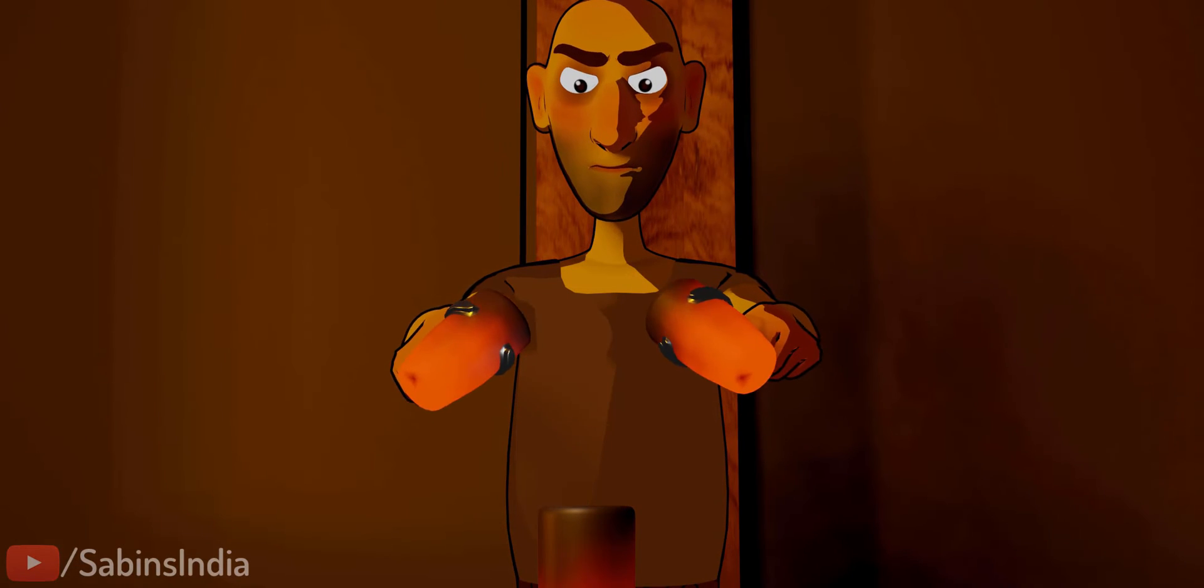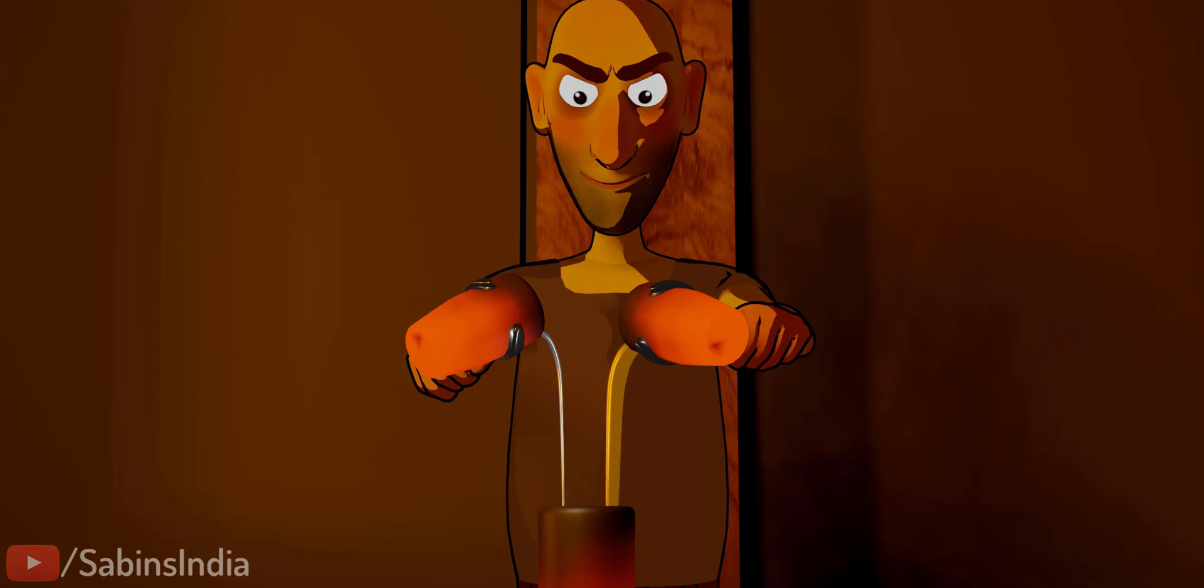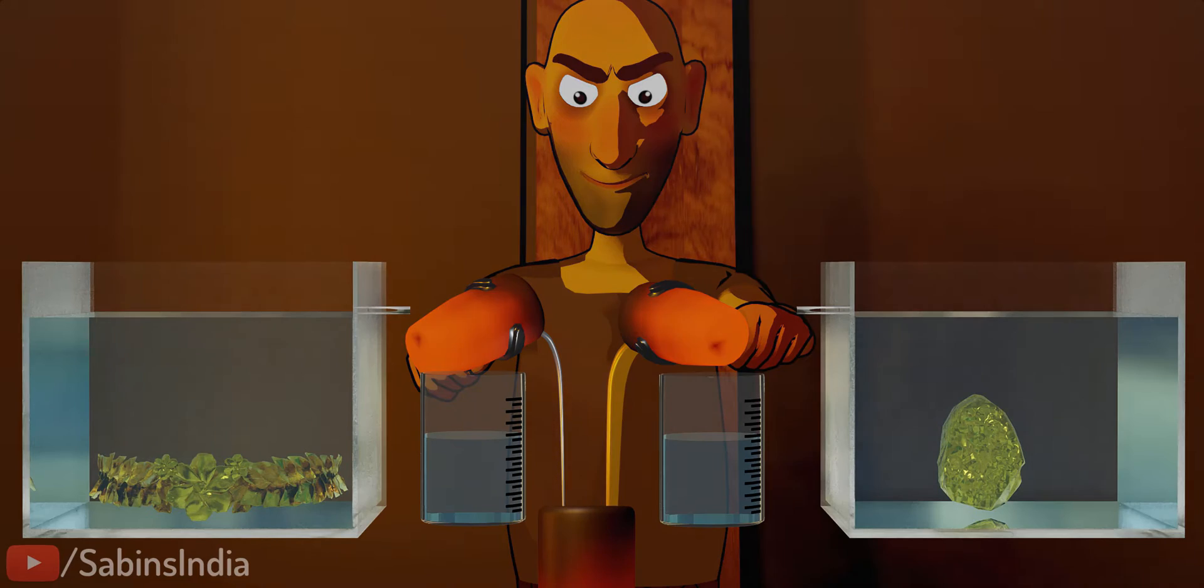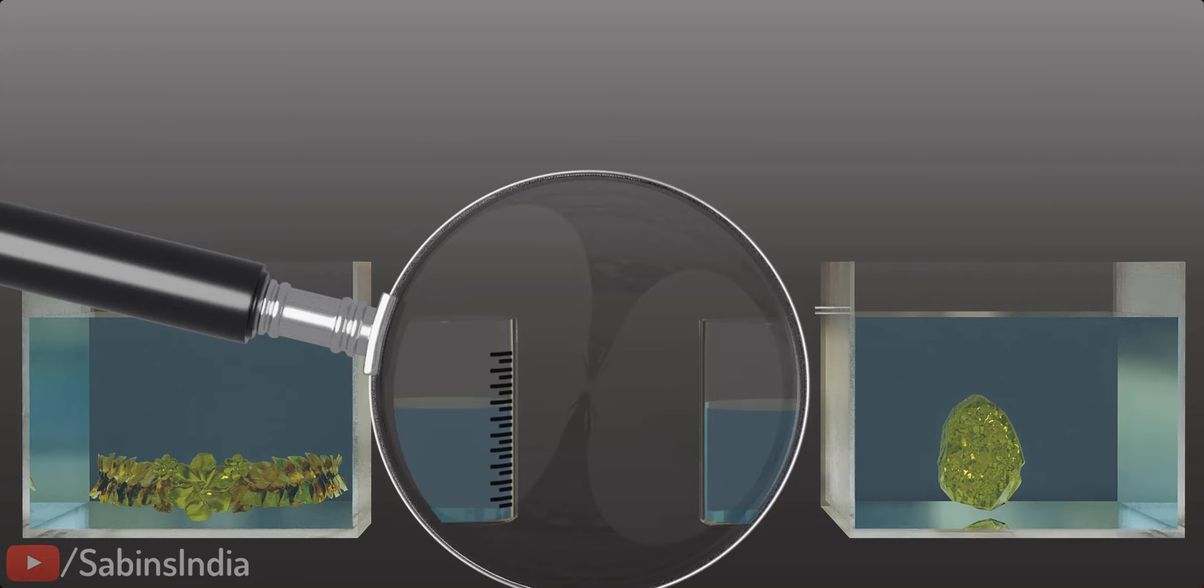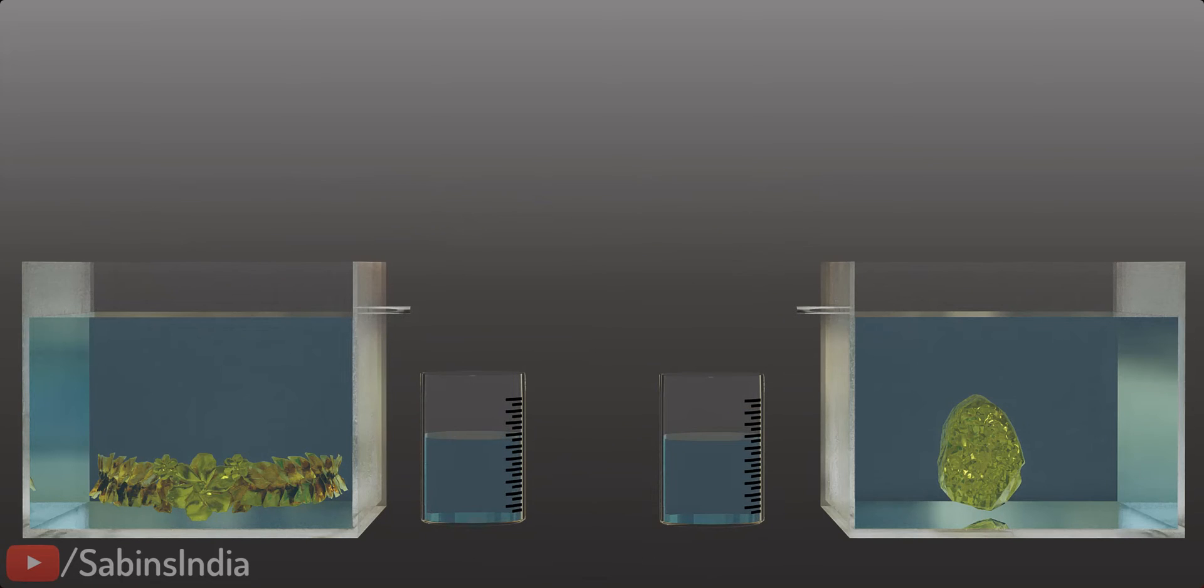However, assume that the goldsmith had mixed in 10% silver. The volume difference in water displaced would be too negligible to notice. Therefore, this is not a practical method. Moreover, this is a simple volume measurement method. There is no application of Archimedes' principle here.